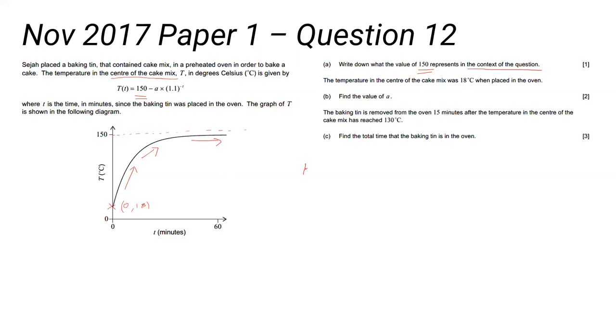For part b, you know that the temperature at time t is 150 minus etc etc. So the temperature at time t is 18, and you know that equals 150 minus a times 1.1 to the power negative t. And t is 0, so there you go, you can solve that now.